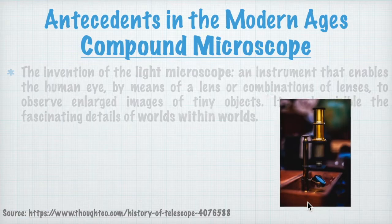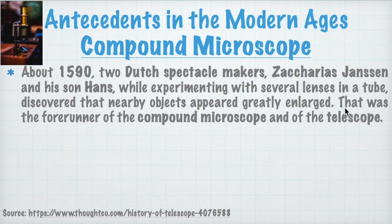About 1590, two Dutch spectacle makers, Zacharias Janssen and his son Hans, while experimenting with several lenses in a tube, discovered that nearby objects appeared greatly enlarged. That was the forerunner of the compound microscope and, of course, of the telescope.